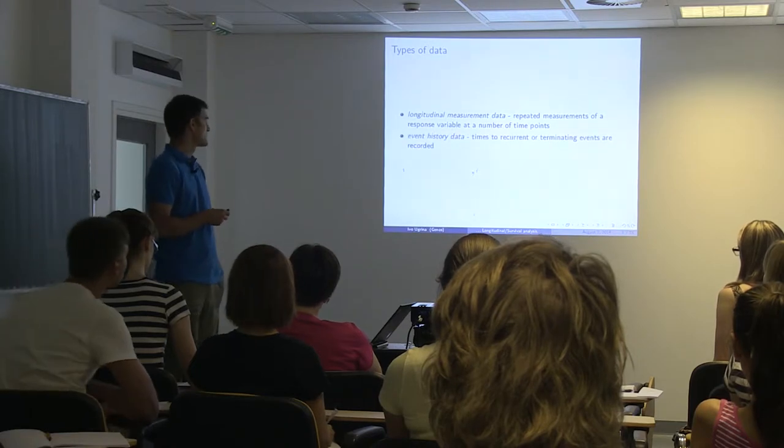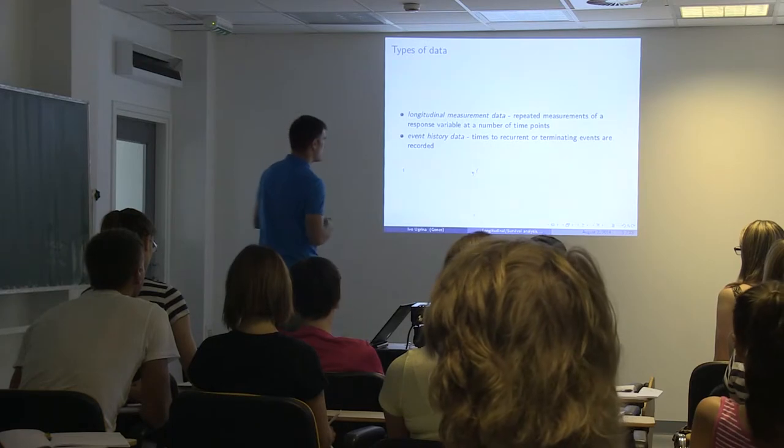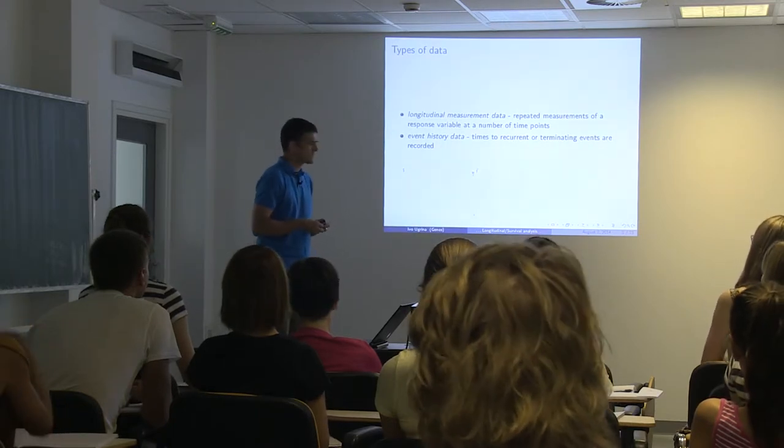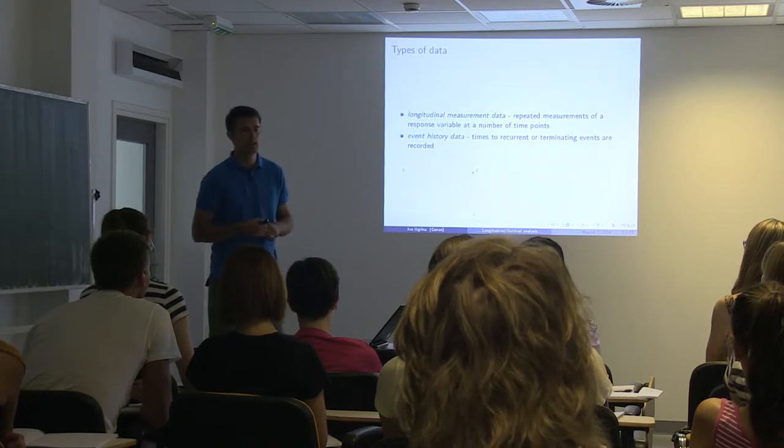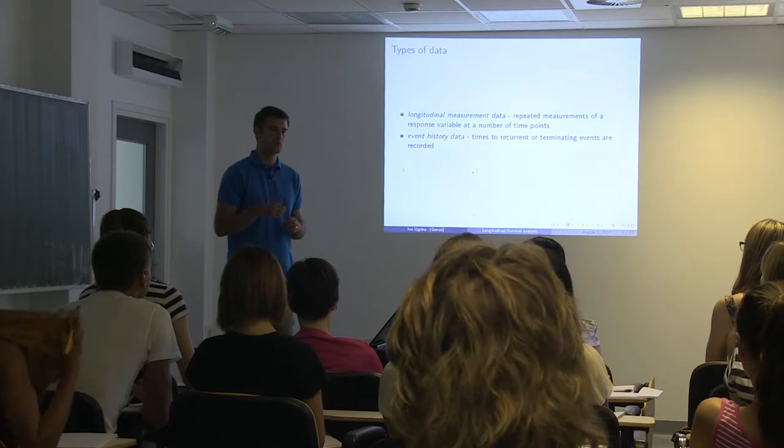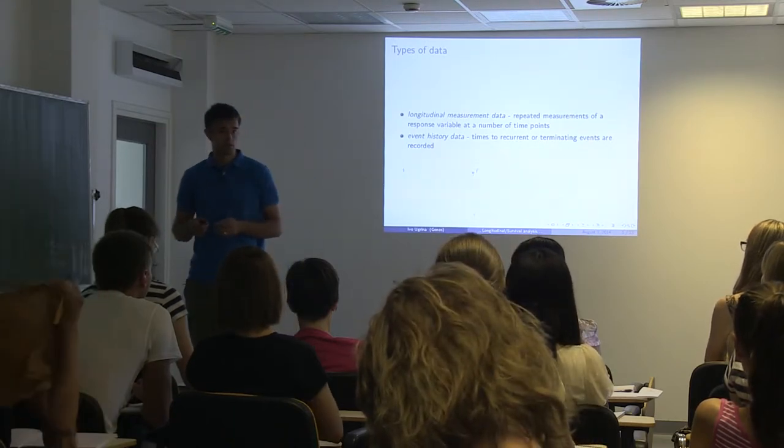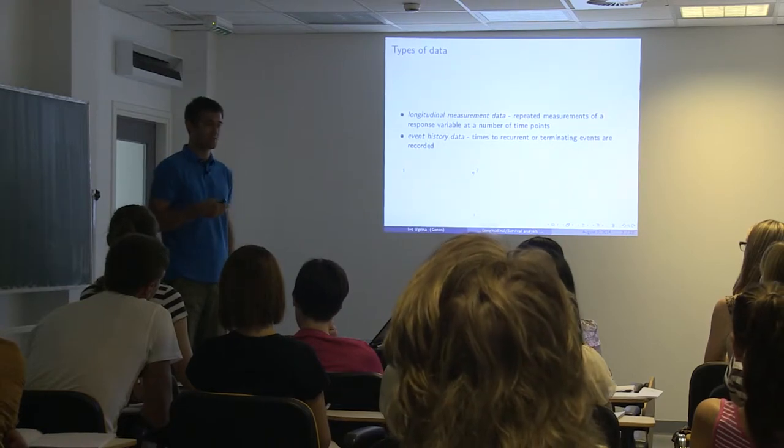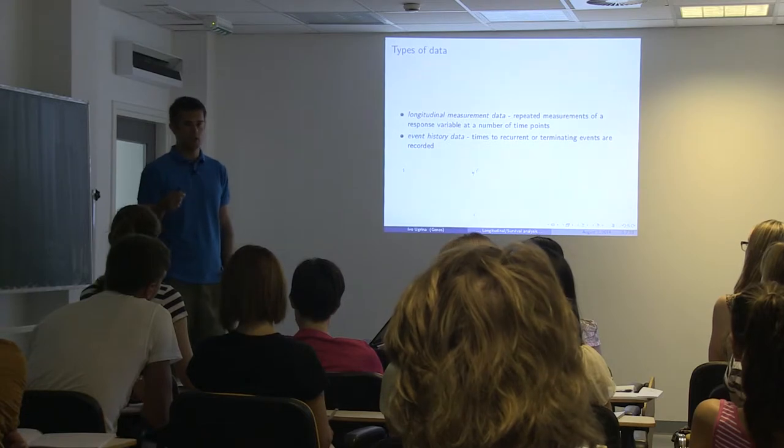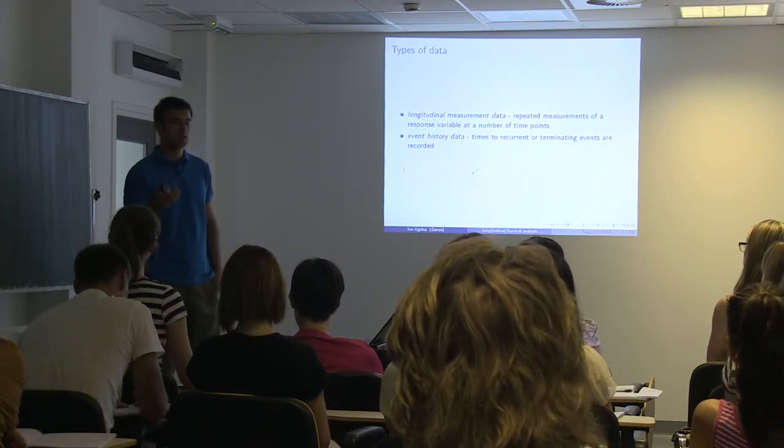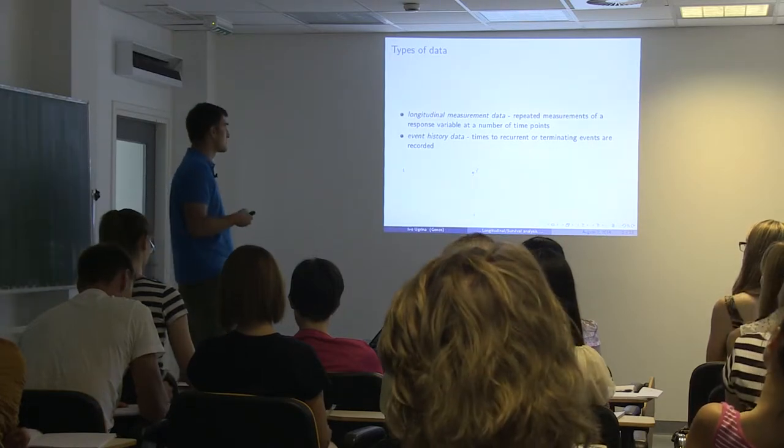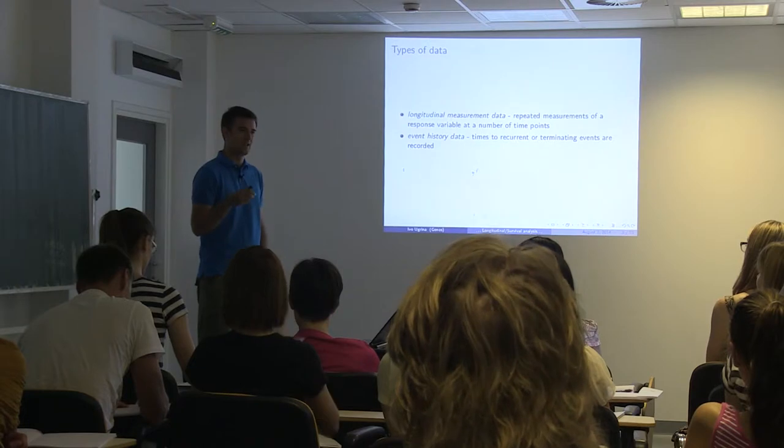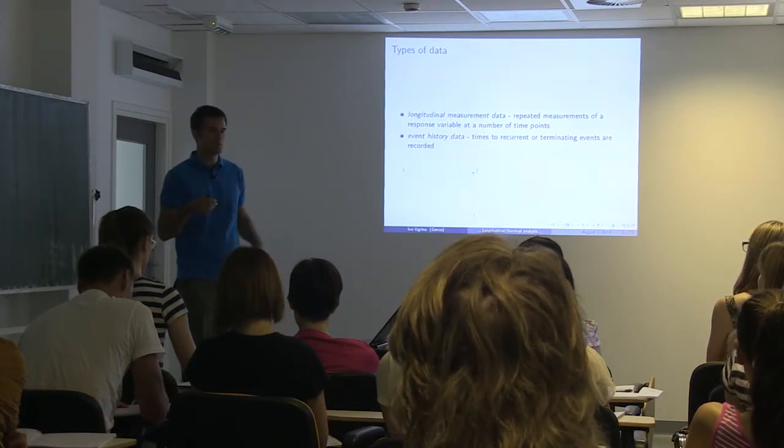The other thing is regarded to survival and it's called event history data, which are times to recurrent or terminating events that are recorded. So that's survival. You get, as a medical doctor, somebody who's got prostate cancer, for example, and you write in your notes, he came on 2nd of August, 2014, and then he needs to come every month or something like that. When he dies or something happens, you write he died after 917 days, for example. So if you have 100 people with prostate cancer, for some of them you have exact time that he survived, then you can do some kind of analysis about it.